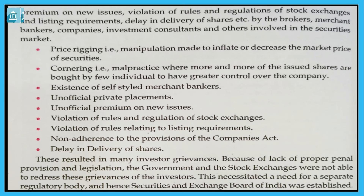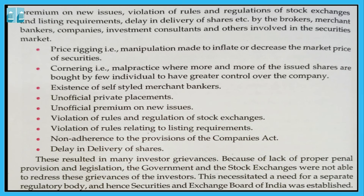Another malpractice is cornering — where more and more of the issued shares are bought by a few individuals or institutions to have greater control over the company. Cornering means a group of family or friends takes control by buying a majority of shares, which is a form of malpractice named cornering.